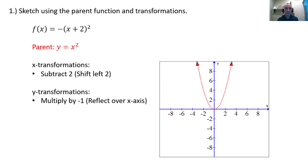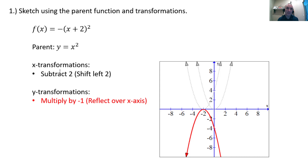Let's see how this works when we go to graph. Start with the y equals x squared function, shift it left 2 units, and then reflect it over the x-axis. As far as order goes, it doesn't matter whether you do x transformations first or y transformations first, because they're completely independent. However, if you have multiple x transformations, the order of those does matter. Or if you have multiple y transformations, the order of those does matter. X and y transformations are independent, but all x transformations need to be done in the proper order, and all y transformations also need to be done in the proper order.